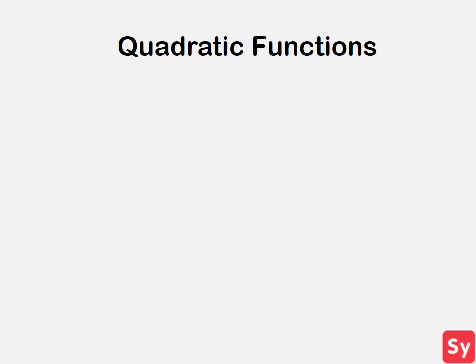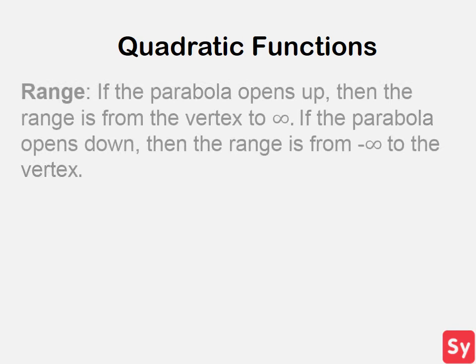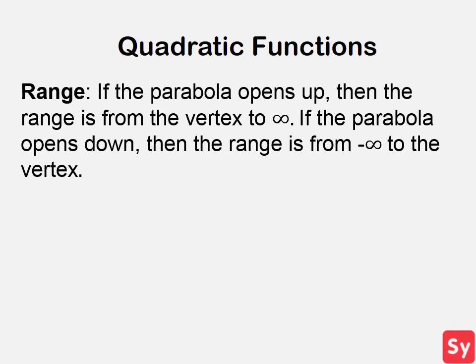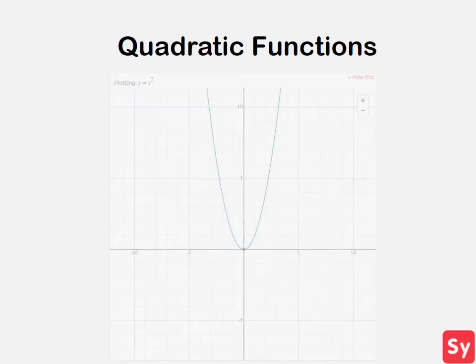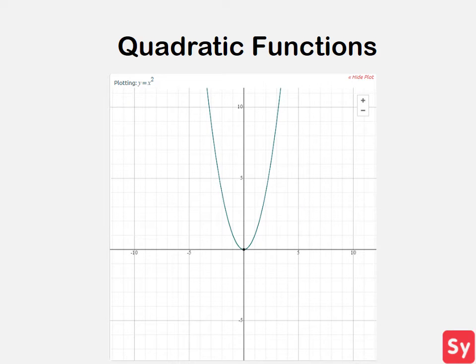Finally, we will talk about the range of quadratic functions. If the parabola opens up, then the range is from the vertex to infinity. If the parabola opens down, then the range is from negative infinity to the vertex. Here's an image of a quadratic function, y equals x squared, where the parabola opens up.